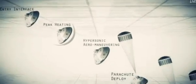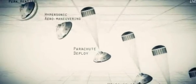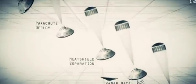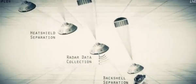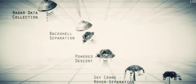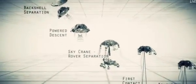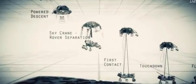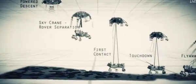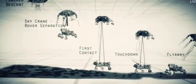Entry, descent, and landing, also known as EDL, is referred to as the seven minutes of terror because we've got literally seven minutes to get from the top of the atmosphere to the surface of Mars, going from 13,000 miles an hour to zero in perfect sequence, perfect choreography, perfect timing, and the computer has to do it all by itself with no help from the ground. If any one thing doesn't work just right, it's game over.